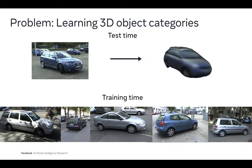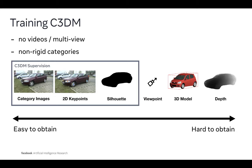C3DM reconstructs the 3D shape of an object from a single image. At training time, the method requires a collection of images of a category, without any 3D annotation or multiple views. We supervise C3DM with sparse semantic keypoints and object silhouettes. Both can often be obtained automatically with methods like HRNET and MASK-RCNN.